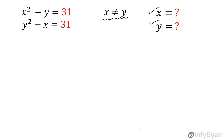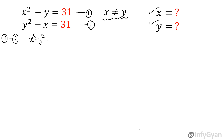Let us start by considering the first one as equation 1 and the second as equation 2. Now take away equation 2 from equation 1. Once you do that, it will come out: x squared minus y squared, and minus of minus x will become plus x, minus y, equal to 0.